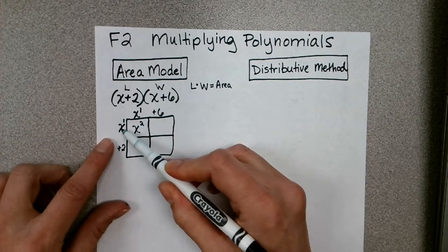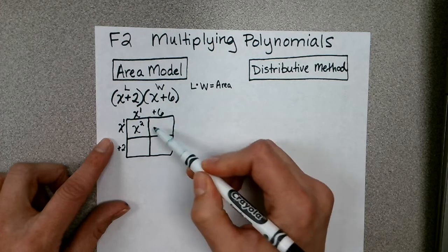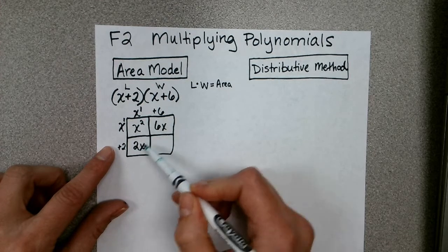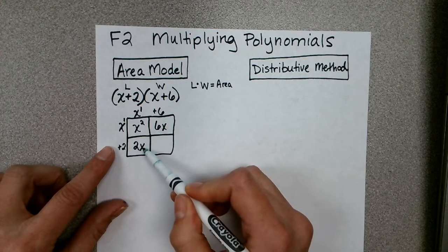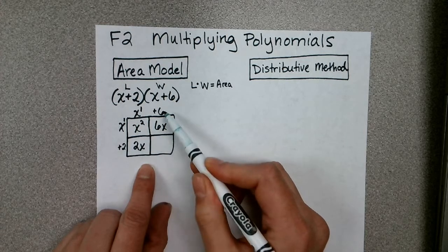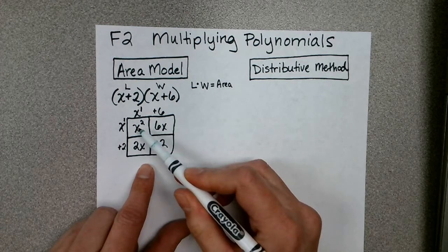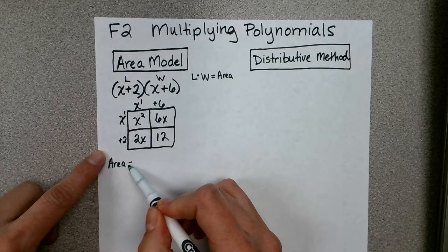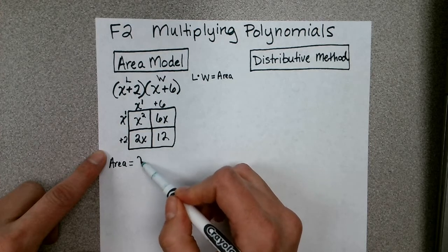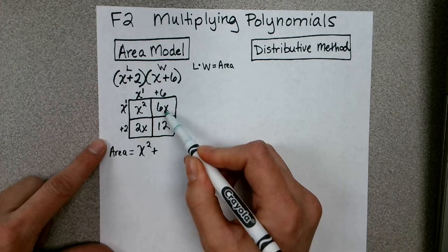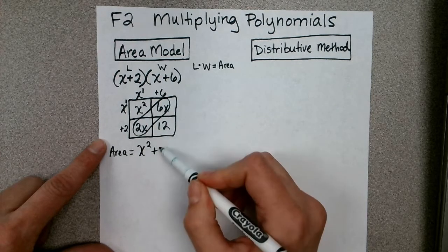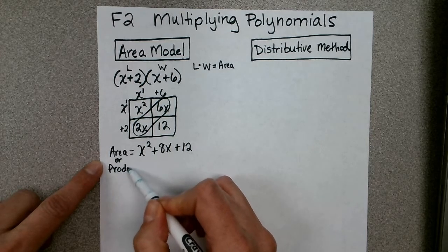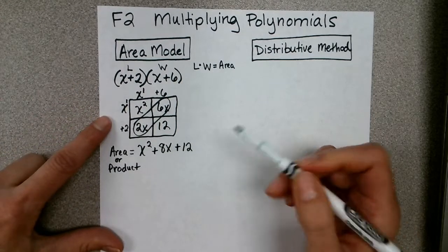To get the next area, we take length times width again: x times 6 gives us 6x, and 2 times x gives us 2x. Then 2 times 6 is 12. Each of these represents an individual area. To find the entire area we add them together: x squared plus 6x plus 2x — which we combine to get 8x — plus 12. So the product is x squared plus 8x plus 12.